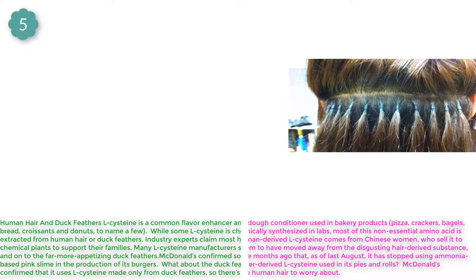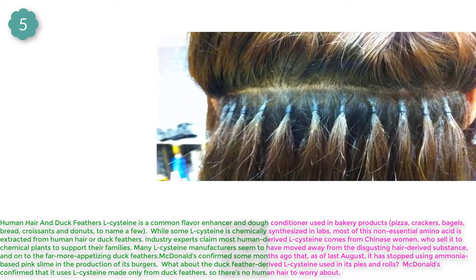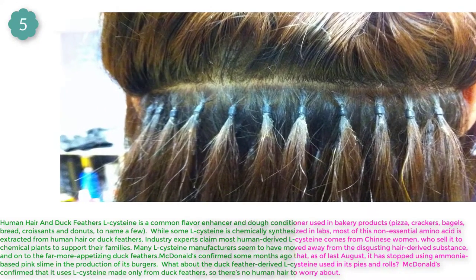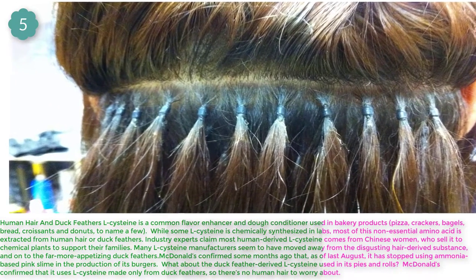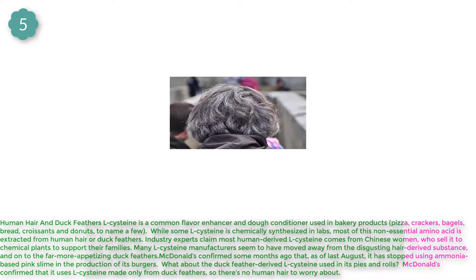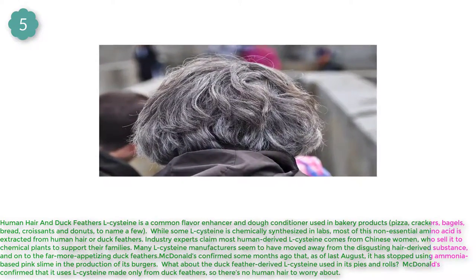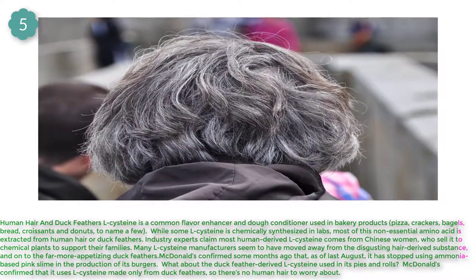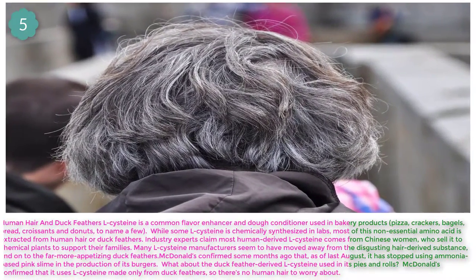Number 5: Human hair and duck feathers. L-cysteine is a common flavor enhancer and dough conditioner used in bakery products — pizza, crackers, bagels, bread, croissants, and doughnuts, to name a few. While some L-cysteine is chemically synthesized in labs, much of it is derived from human hair and duck feathers.